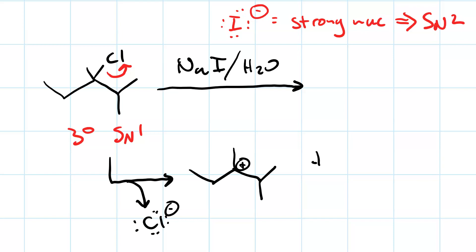In the second step, our iodide ion can attack from the front or the back with no preference, so we'll get a racemic mixture of the two different tertiary alkyl iodides.